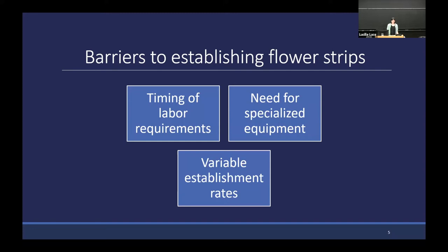There are a couple of reasons for this — a few that show up again and again in the literature and in our conversations with a diverse group of folks. One problem is that in this part of the world, flower strips are supposed to be established either in the fall or the spring, often around the time of the first frost or the last frost. Even more than other parts of the year, growers are busy and frequently just don't have time for an extra field operation.